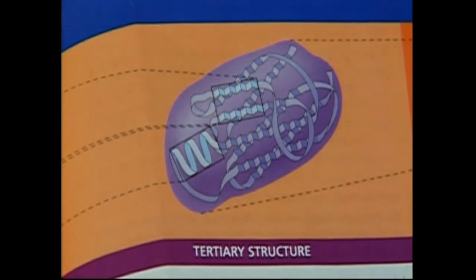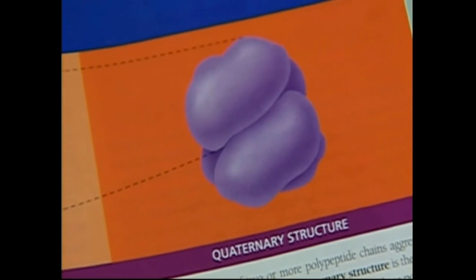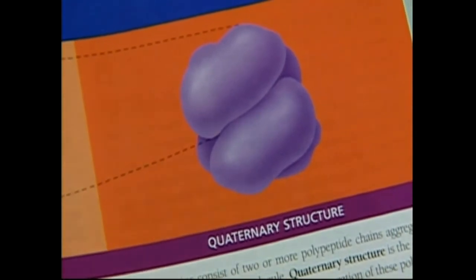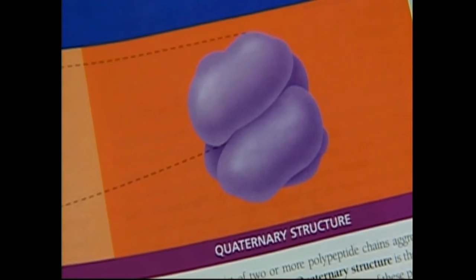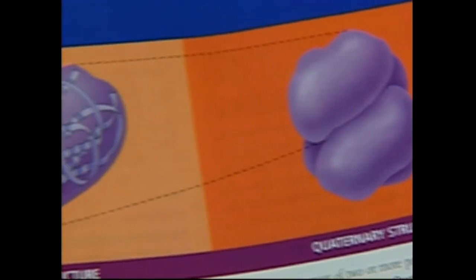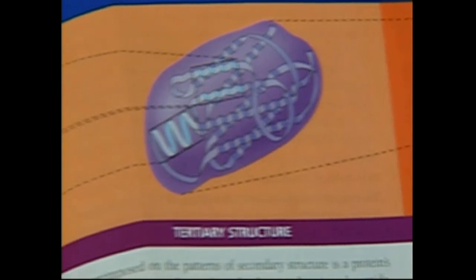We're not even close. And then they'll go on to call this the quaternary structure. This would be like the overall size of this enzyme. So those are the four structures, as they call it. So this is where I'm at.